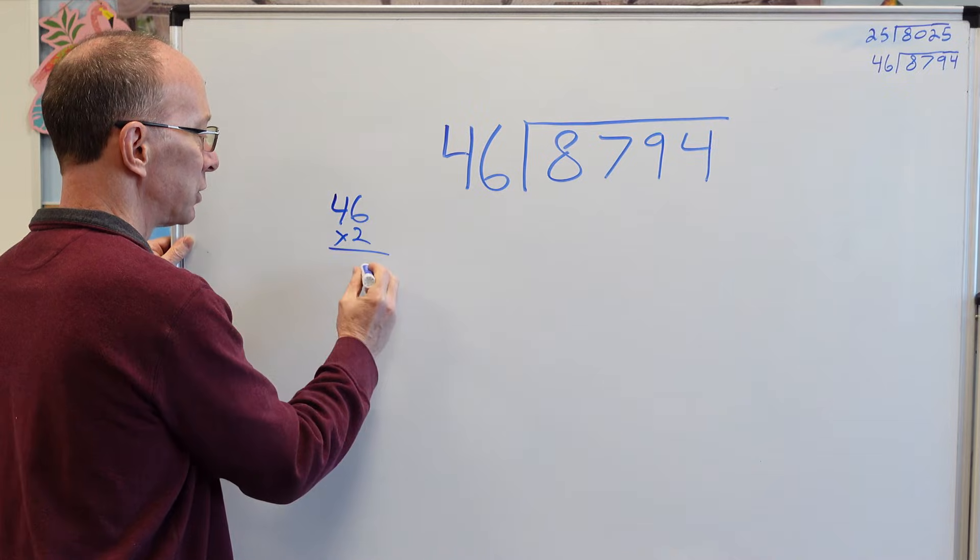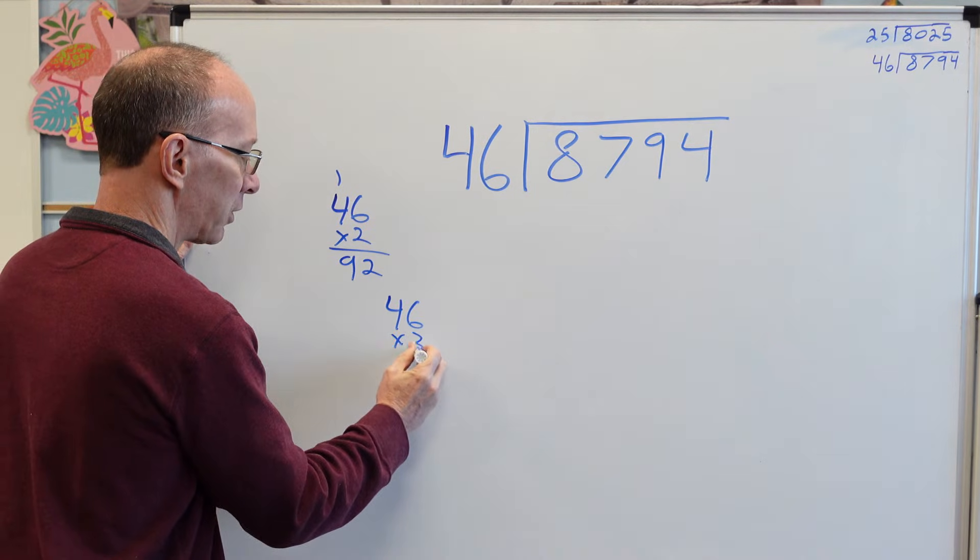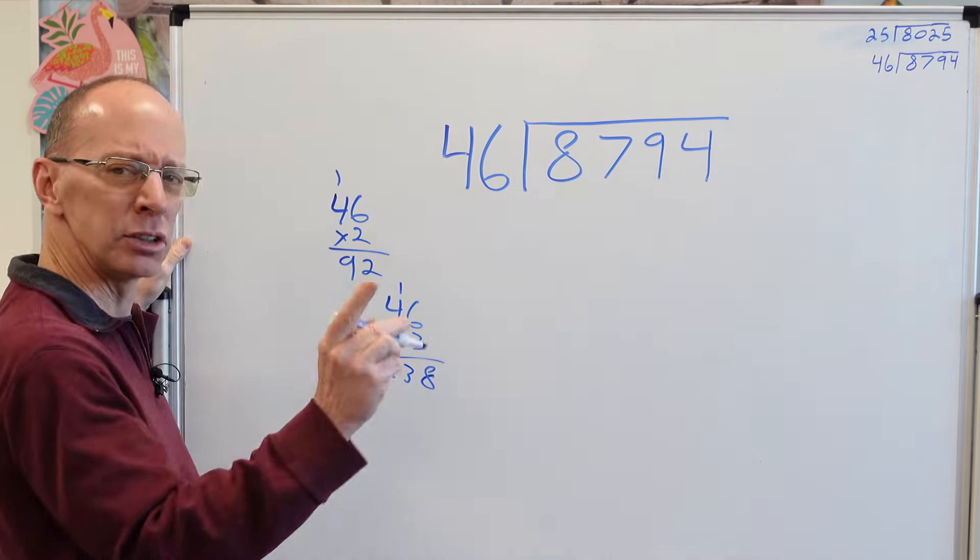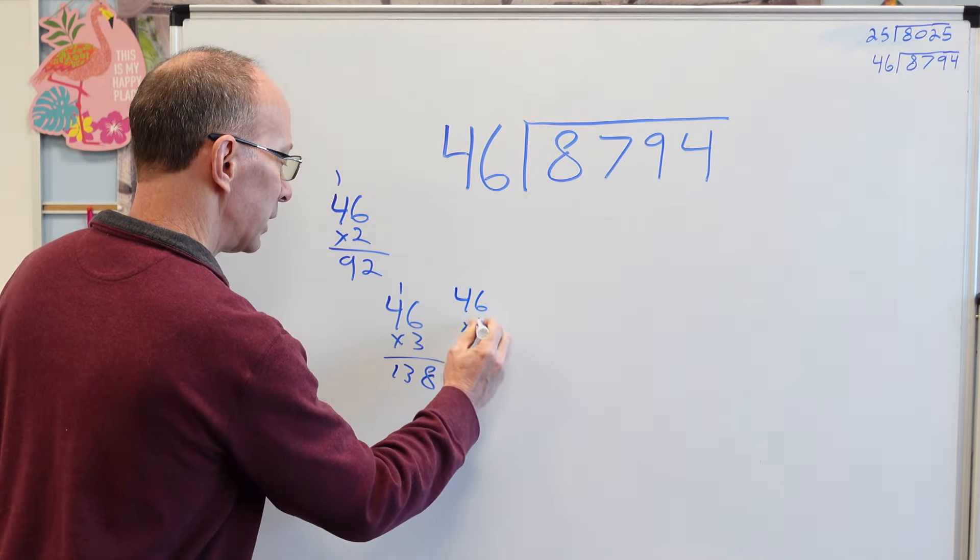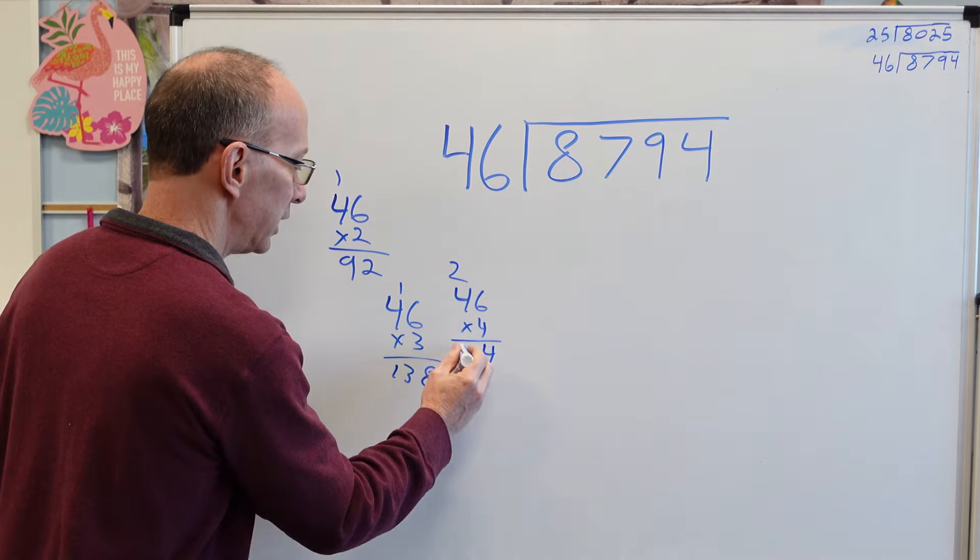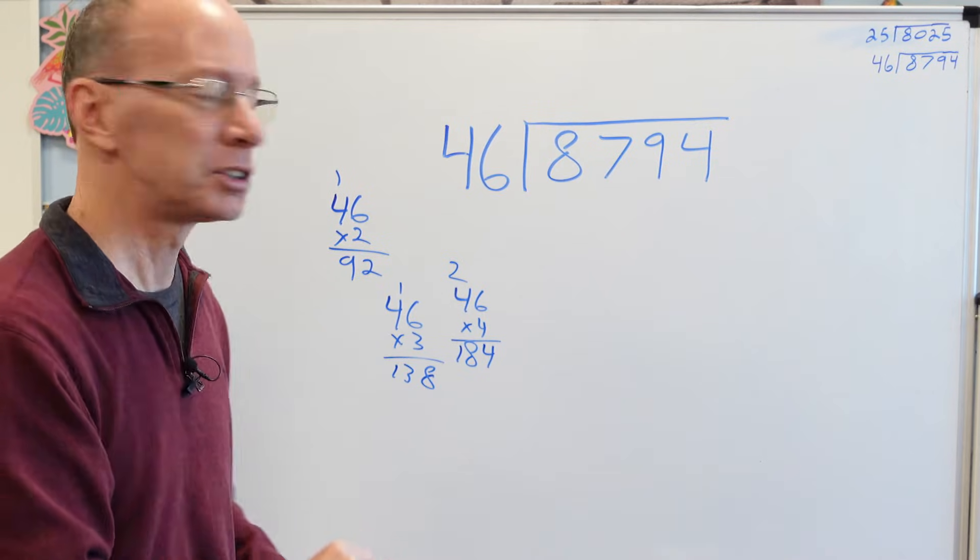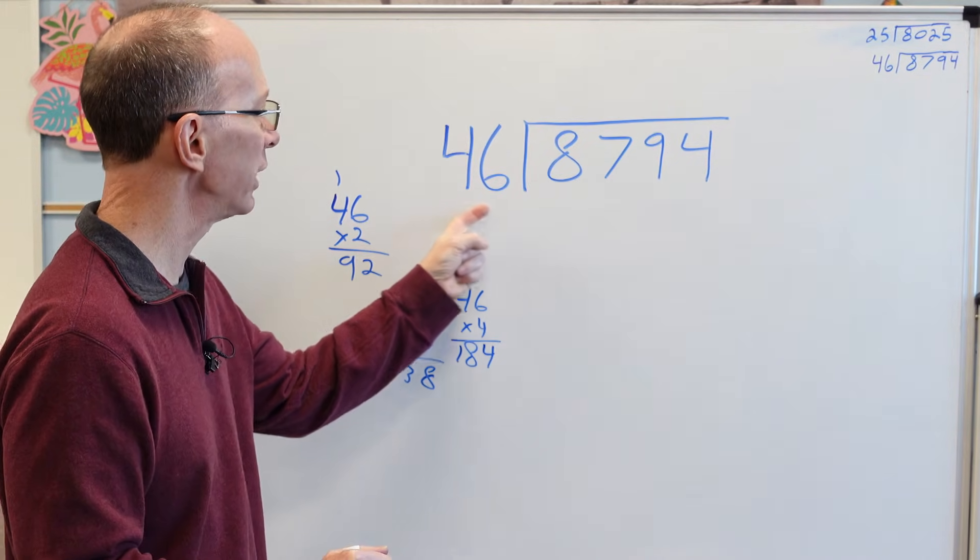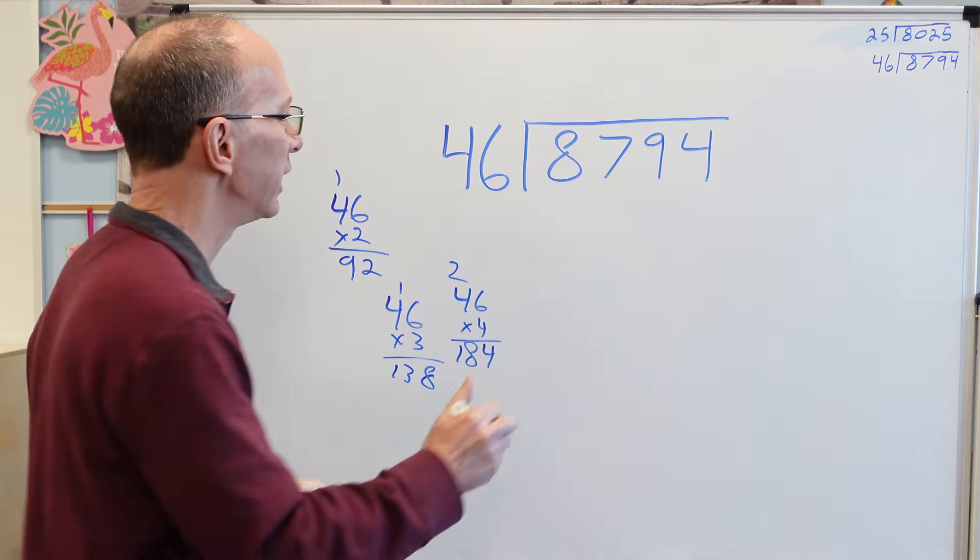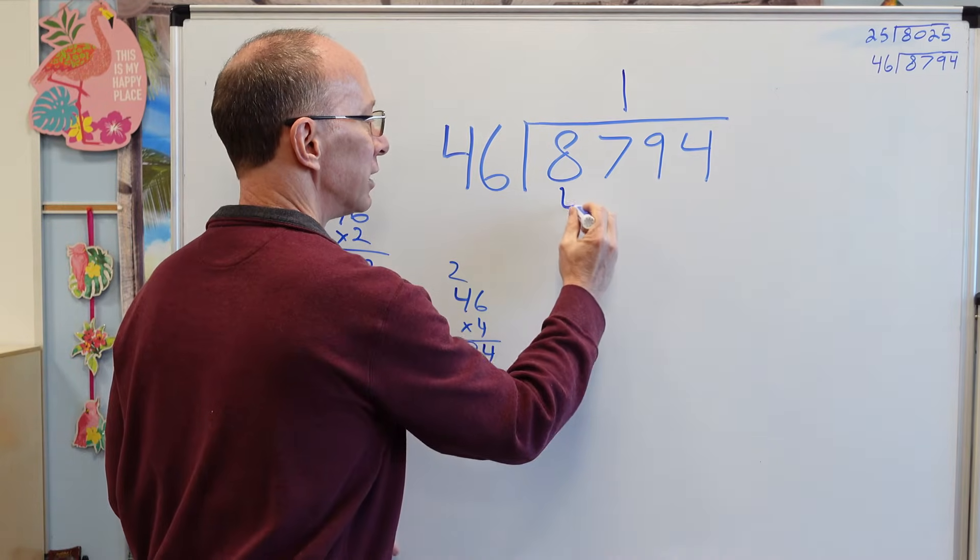So 46 times 2. 6 times 2 is 12. 4 times 2 is 8. And then 9 right here. And then I'll do 46 times 3. 6 times 3, 18. Carry the 1. 4 times 3 is 12. 13, 13. Let's do one more. Just 46 times 4. So 6 times 4, 24. 4 times 4, what is it? 16, 17, 18. All right. It's important to memorize your multiplication. If you haven't done it, start doing it right now. Okay, now, 46. How many times can I put 46 into 87? The 2 is too big. All right. So I'm only going to be able to put it in 1 time. So I'm going to put 1 right here.